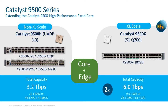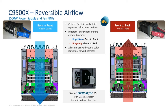Let us compare this with our 9500 High Performance series switches, which were powered by the UADP 3.0 ASIC. The maximum bandwidth provided by that ASIC was 1.6 Tbps, and multiple ASICs were needed to provide a total bandwidth of 3.2 Tbps. In contrast, a single Cisco Silicon One ASIC on the 9500 X can provide a bandwidth of 6 Tbps.